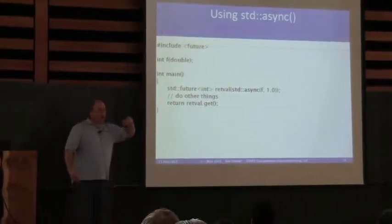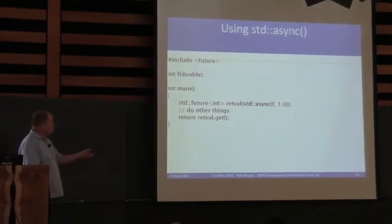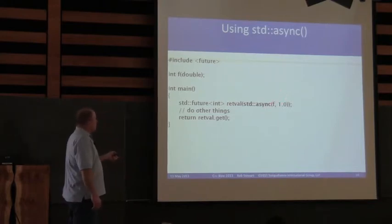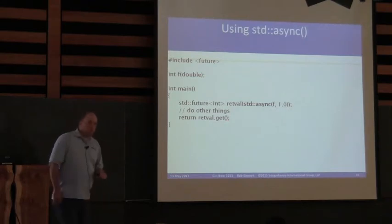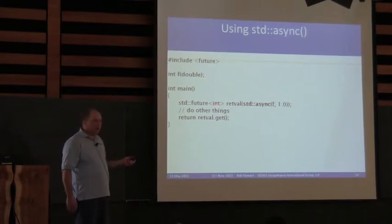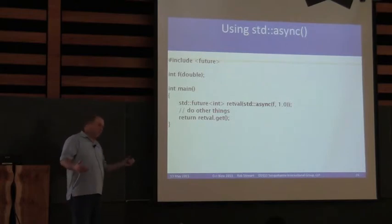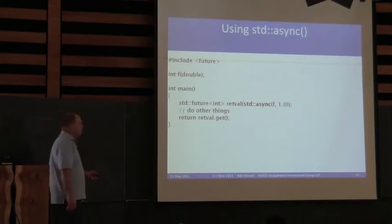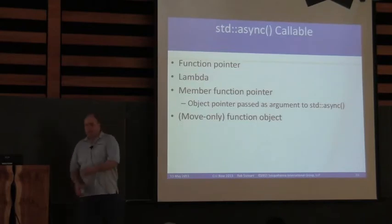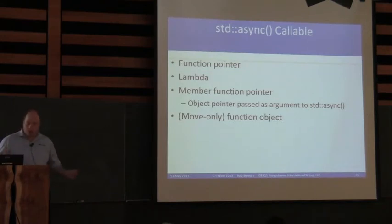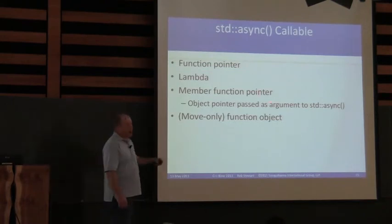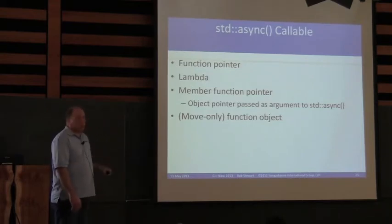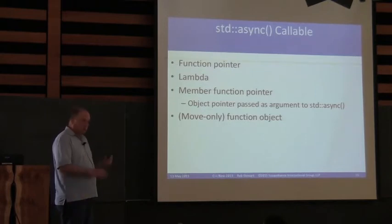Here we've got a simple function f that takes a double and returns an int. We're going to call std::async, pass in f and its argument 1.0. Notice that async returns a future parameterized by the type we want get to return. We do whatever else we want and then call get — simple usage. The callable can be a function pointer, a lambda, a functor, or a member function pointer. If it is a member function pointer, you also pass the object pointer you want invoked on. The function objects can even be move-only.